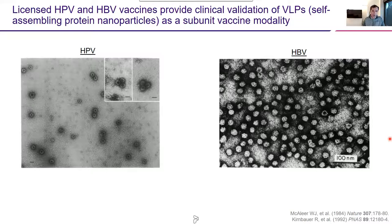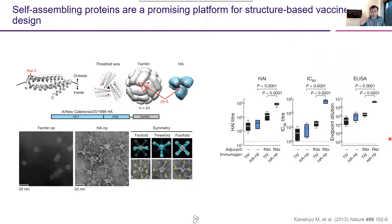I'll be talking today about self-assembling protein vaccines. This is, of course, a clinically validated vaccine modality. HBV and HPV vaccines are both self-assembling proteins — virus-like particles where the capsid protein from the virus or the surface antigen from hepatitis B naturally self-assembles to form a particulate immunogen. These are some of the best subunit vaccines that we have. However, if your antigen doesn't naturally self-assemble — for example, influenza hemagglutinin — then you need a heterologous self-assembling scaffold upon which to present your antigen.